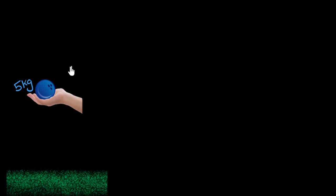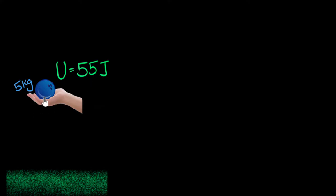According to our example, this ball has a potential energy — the symbol we use is U — and the potential energy of this ball is 55 joules. Now here's my question: a five kilogram ball held at this point has 55 joules. How much potential energy would a one kilogram ball held at the same point have? Less mass means less potential energy. With only one kilogram — one fifth of the mass — the potential energy would also be one fifth: 11 joules.